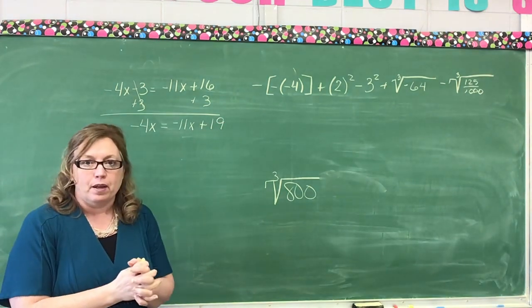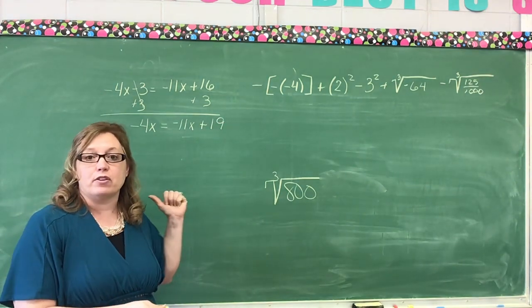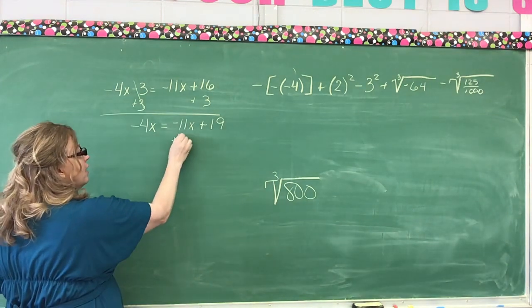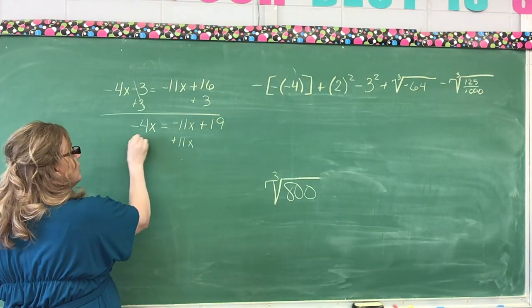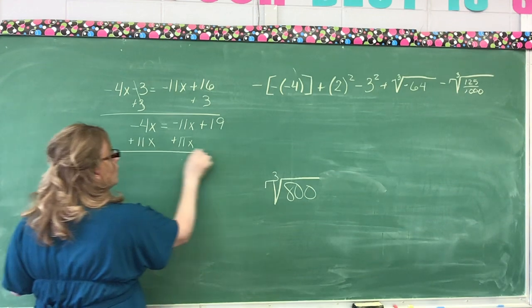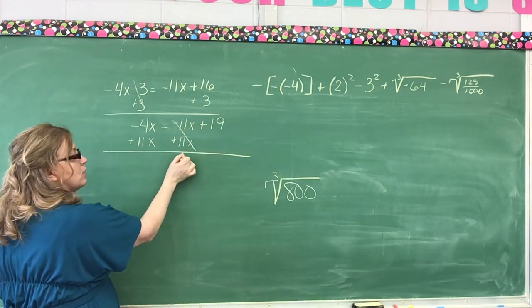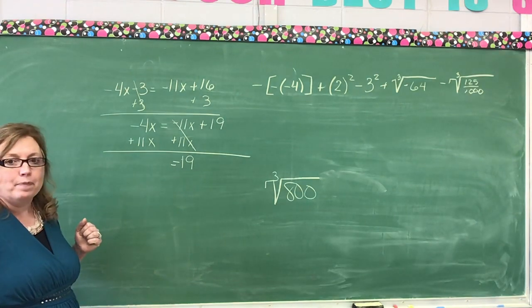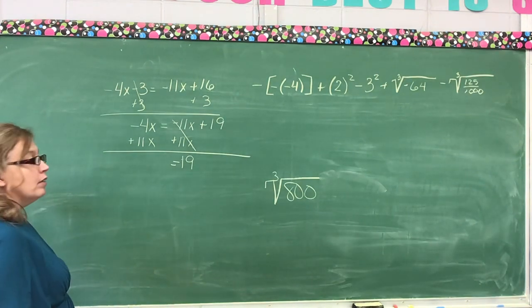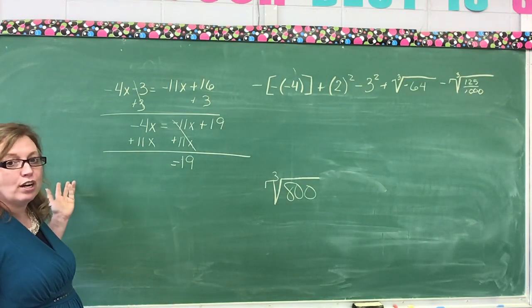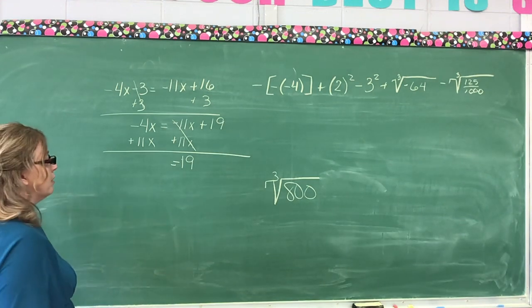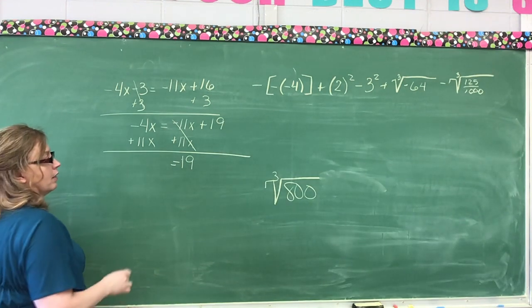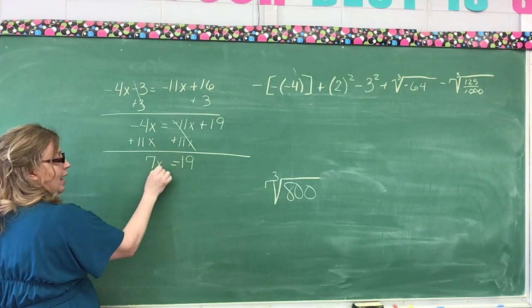Now what am I going to do? I need to get that 11x to the other side. So I'm going to add 11x to each side. When I do that, this is going to cancel, leaving us the 19. On this side, think it through, some of you are just trying to wait for me to give you the answer. We're going to have 7x.